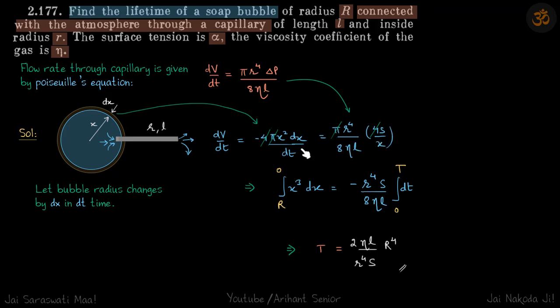So these two we are going to simplify. So we have a term of dt here and we have a term of dx here. So take the variables on the other side. We will integrate. So the bubble collapses. So the limits of x will be capital R to 0 times 0 to t. We will get our answer. This is the time taken by the bubble to collapse.